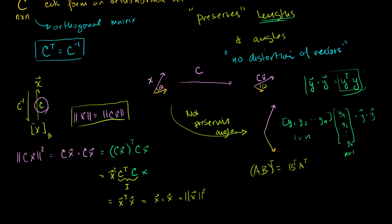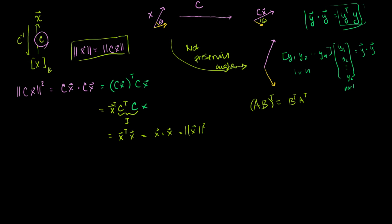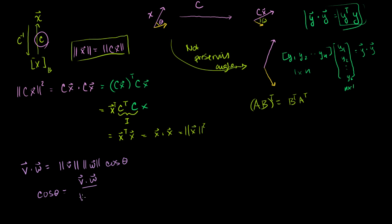We defined angles using the dot product throughout linear algebra so we could be general. We used the law of cosines and an analogy to triangles in R2 to define that v dot w equals the product of the lengths of the two vectors times the cosine of the angle between them. Equivalently, the cosine of the angle between two vectors is their dot product divided by the product of their lengths. This definition extends the idea of angle to arbitrarily high dimensions.